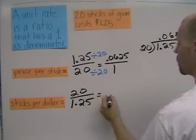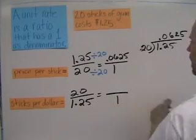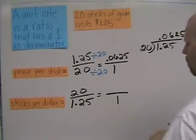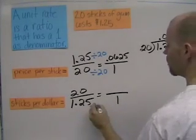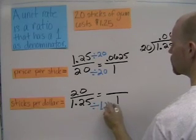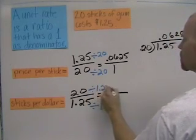And once again, we want the denominator to be 1. So how are we going to get this denominator to be a 1? We're going to divide by 1.25, and we're going to divide by 1.25.